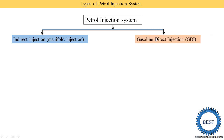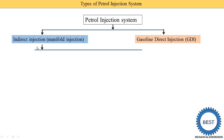The second category is gasoline direct injection, known in short as GDI. In direct injection, petrol is directly supplied to or sprayed inside the combustion chamber. So from the name we can understand: direct means it is directly sprayed inside the combustion chamber, and indirect means it is injected into the intake manifold.